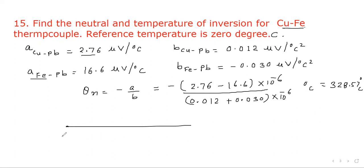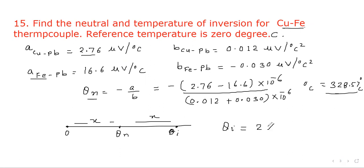Recalling the relationship: the temperature of inversion θᵢ and the neutral temperature θₙ are symmetric about the cold junction temperature. The gap between neutral and cold junction equals the gap between cold junction and inversion. So θᵢ is double the neutral temperature: θᵢ equals 2 times 328.57, giving the temperature of inversion.